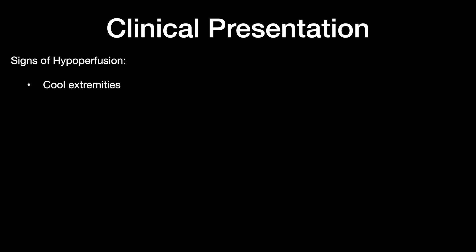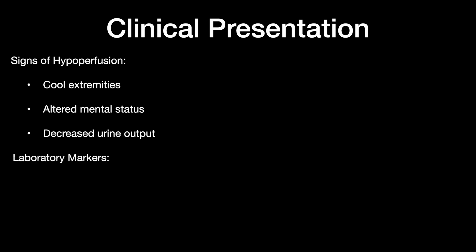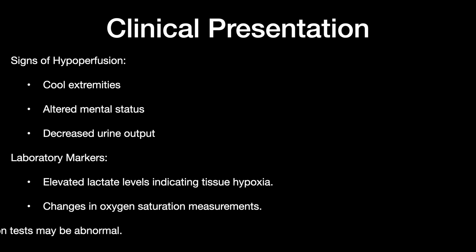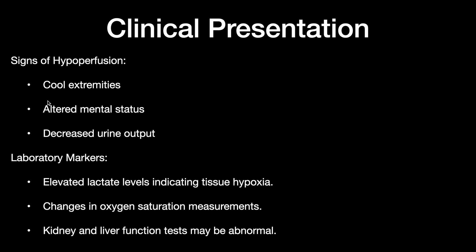In clinical presentation, the signs of hypoperfusion include cool extremities, altered mental status, and decreased urine output. In lab tests, you can look for elevated lactate levels, changes in oxygen saturation measurements, and renal and kidney function disorders. For early identification, we use the three windows to the microcirculation: the skin, the brain, and the kidney. If a patient is cold and altered when presenting to the emergency department or ICU, consider hypoperfusion.